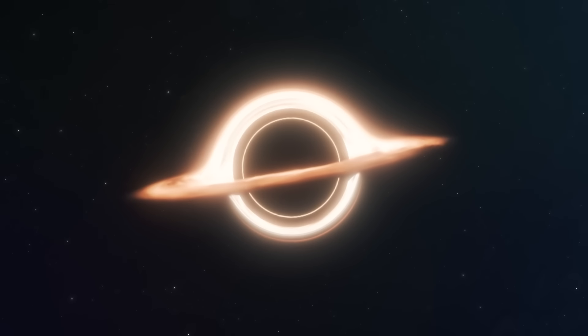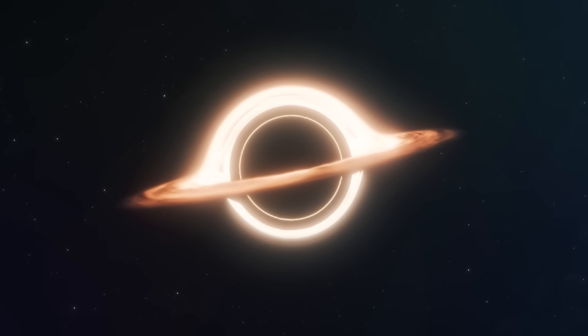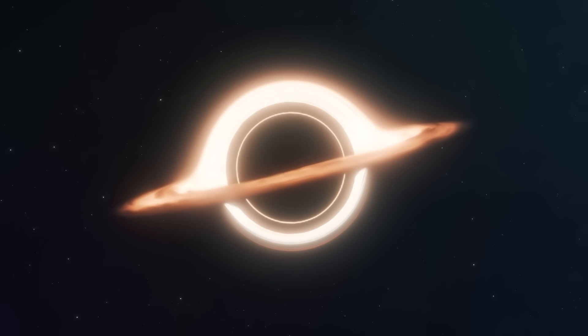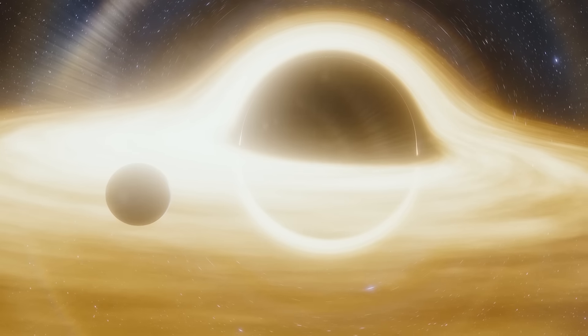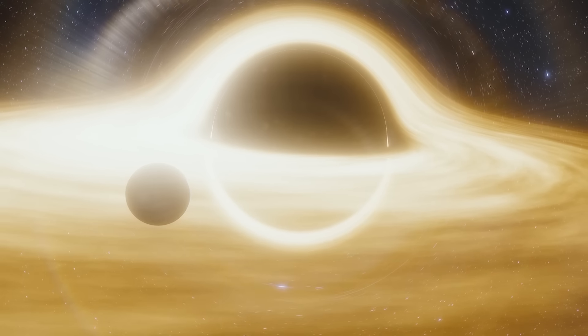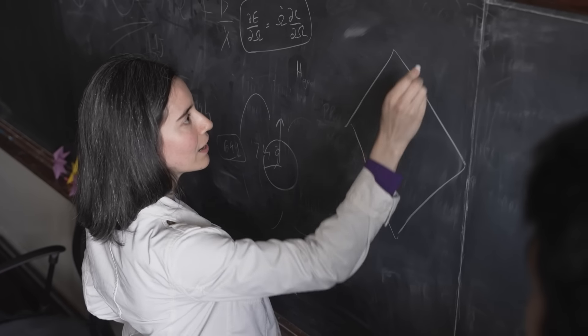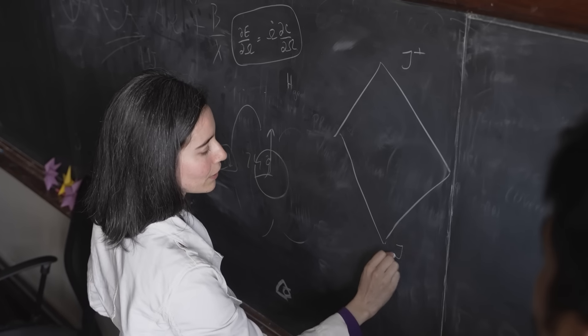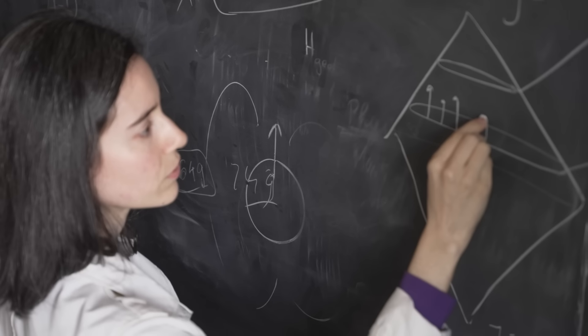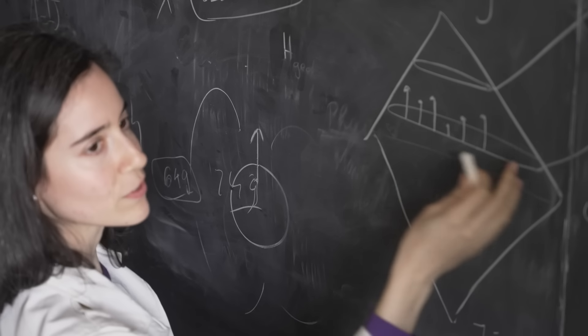Binary black hole mergers are exactly what they sound like — two black holes spiraling around each other until they collide and create a larger black hole. This larger black hole will vibrate at different frequencies, and being able to understand these frequencies can tell us something about the mass and the spin of this remnant black hole. My research focuses on studying what these parameters look like, and it's also a way for us to test general relativity.